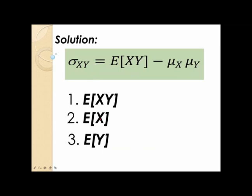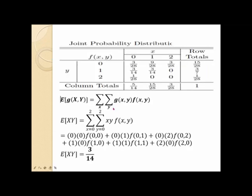To compute the covariance, we'll follow three general steps. First, we'll compute the expected value of xy. Then, we'll compute the expected values of x and y. The expected value of xy is equal to the double summation over all possible values of x and y of x times y times the corresponding probabilities f of x, y. Substituting all the possible values of x and y taken as pairs, the summation yields 3 over 14. Thus, the expected value of xy is equal to 3 over 14.